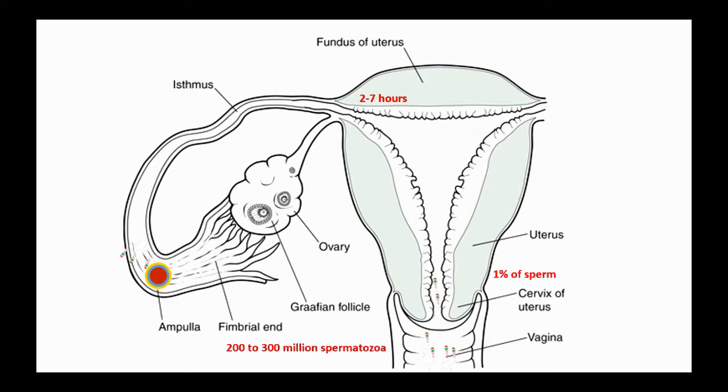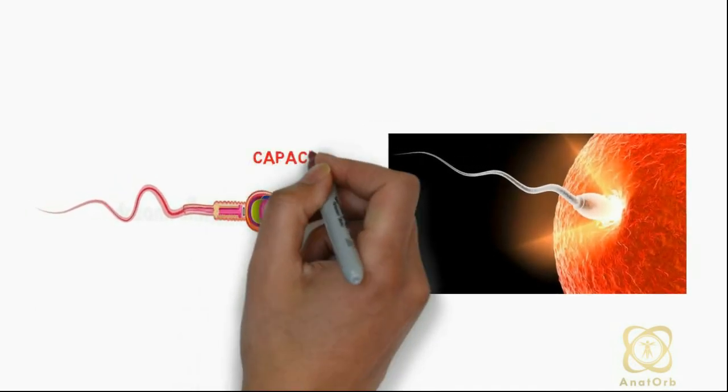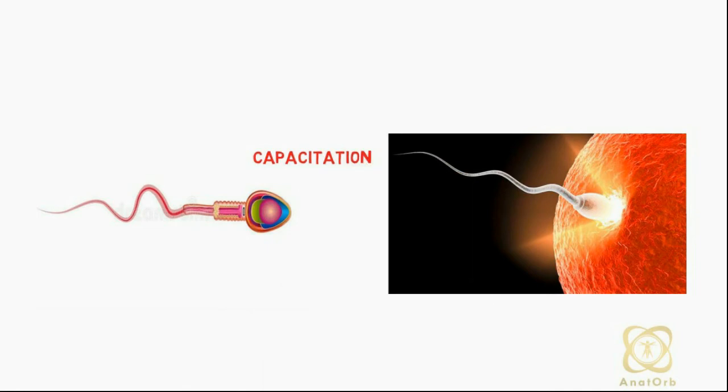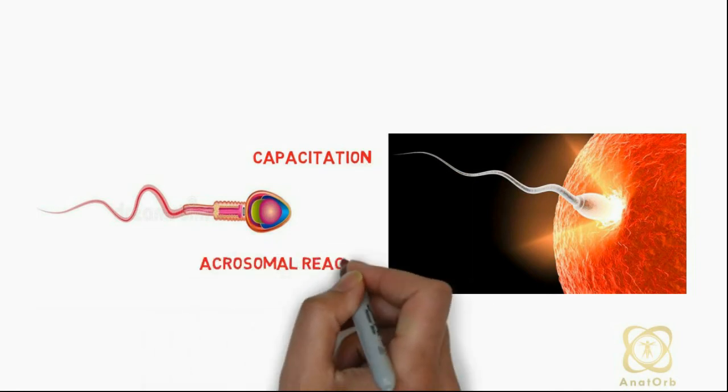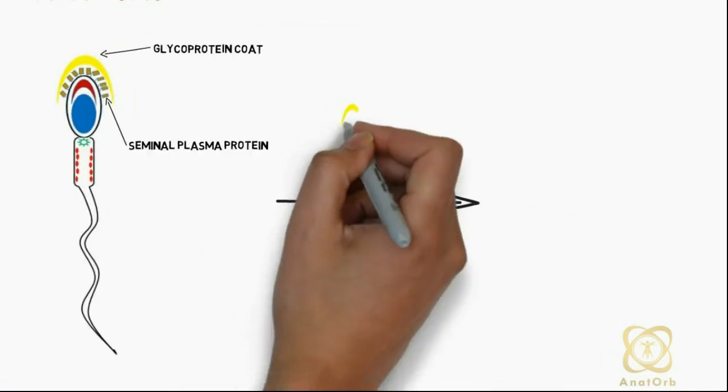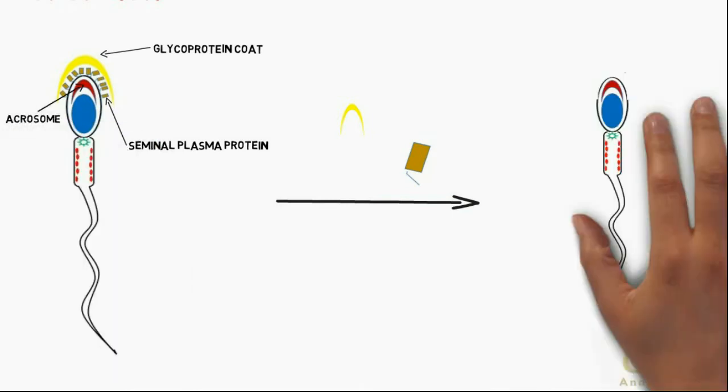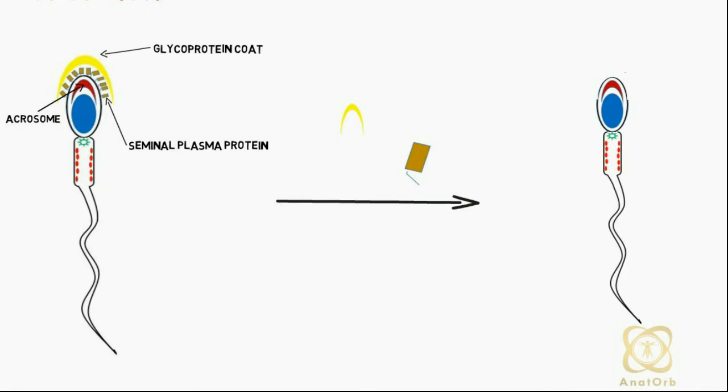Spermatozoa must undergo two processes before it is able to fertilize an oocyte, and these processes are capacitation and acrosome reaction. Capacitation is a process whereby glycoprotein coats and seminal plasma proteins are removed from the plasma membrane that overlies the acrosomal region of the spermatozoa. Only capacitated sperm can pass through the corona cells. This process lasts seven hours in humans.